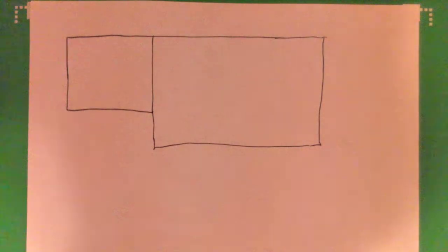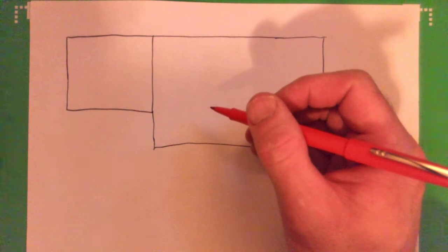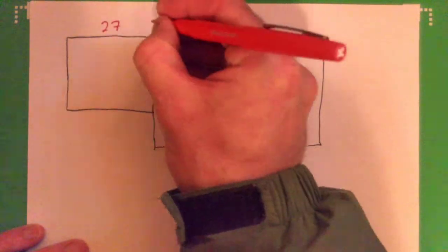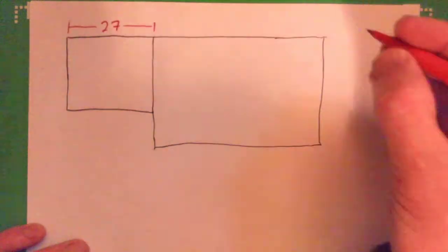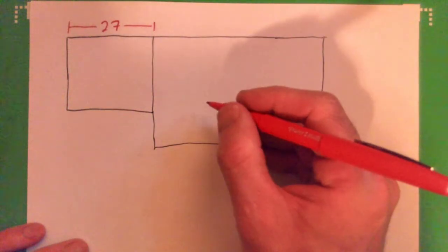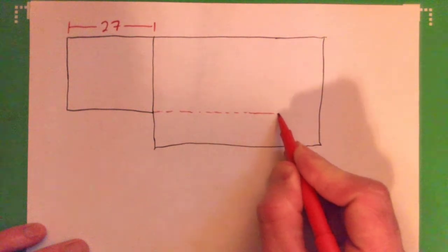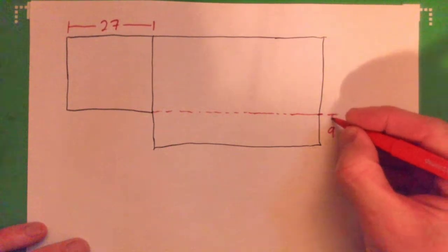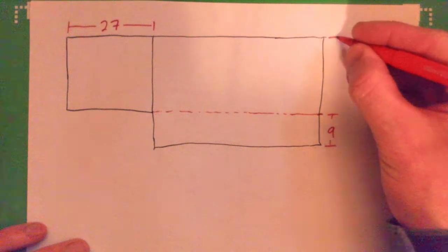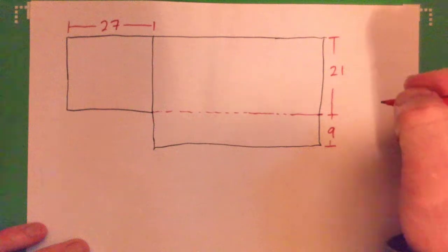All right, so what have we got here? This is 27 feet from here to here. I'm noticing we could draw a parallel line across here like that, and this would be nine from here to here. And then what would it be from here to here? 21 — it says it right there.